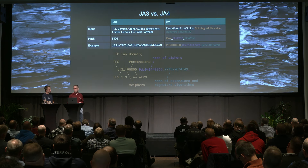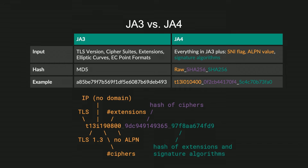JA3, the precursor to JA4, is still probably more popular. JA3 fingerprints TLS handshakes by taking input from the TLS client hello — TLS version, supported cipher suites, TLS extensions, and elliptic curve crypto configuration. It builds a very long string with all that information and does an MD5 sum of it. That MD5 hash is the JA3 fingerprint. For example, a JA3 hash looks like the A85BE string shown here.